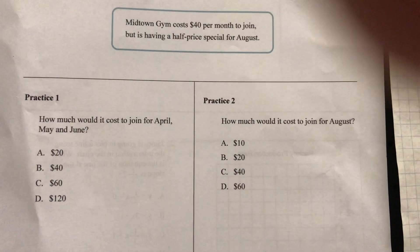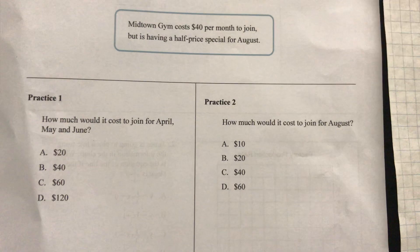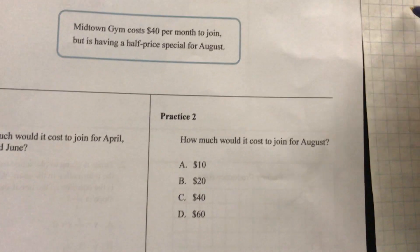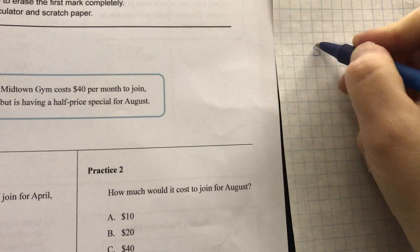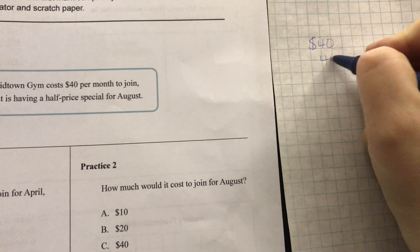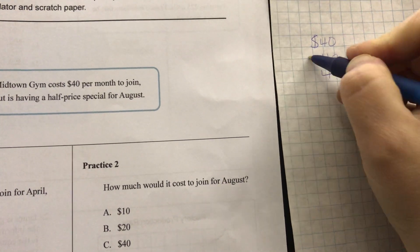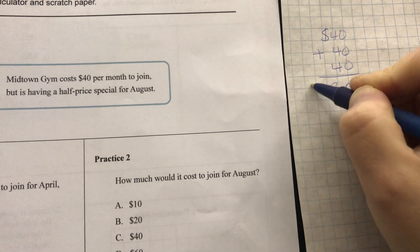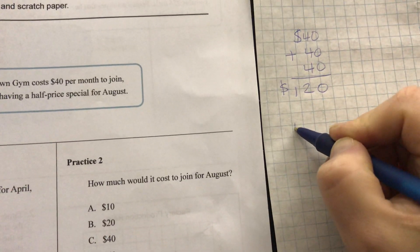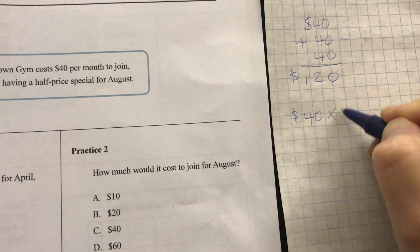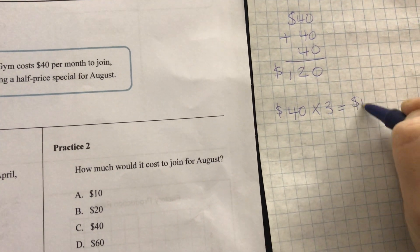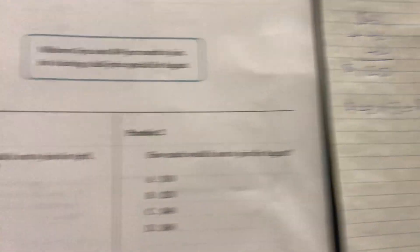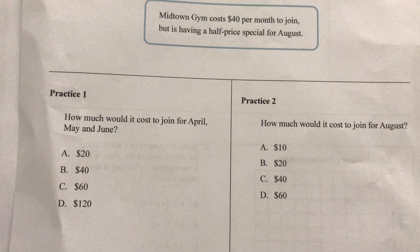Okay everyone, welcome back. So how much would it cost to join for April, May and June? So I know that's three months and three months at $40. So I can think of this as addition, 40 plus 40 plus 40. So 4 and 4 is 12, and then I add the 0 so it's going to be 120. I can think of it as 40 times 3 which would also give me 120, and I can plug those numbers into my calculator if I'm not sure of the answer. So answer to number one would be D, $120.